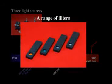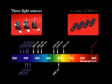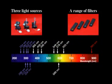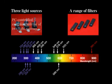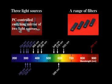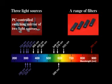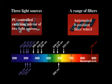Three kinds of light sources and a wide range of filters can be chosen for any individual application. Two light sources can be installed simultaneously in the instrument and selected by a PC-controlled switching mirror. In addition to a manual filter exchange, an automated eight-position filter wheel is available.